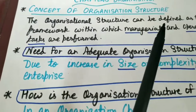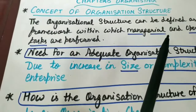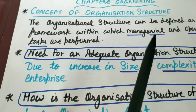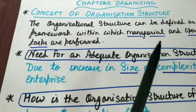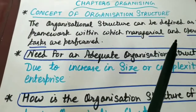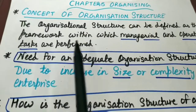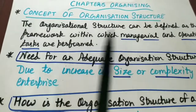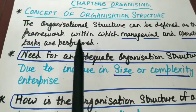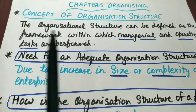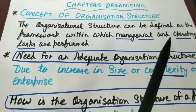Yaani ki, jo hamare different levels hain, un teeno levels pe humne jo job positions create kar rakhi hain, jo authorities assign kar rakhi hain, and whatever responsibilities employees are assuming — inka jo network hai, that is called organization structure. Organizational structure is nothing but the framework within which managerial and operating tasks are performed. Ye basic structure ek organization ka, which provides shape and strength to the organization, and within this basic structure we perform managerial and operating tasks.